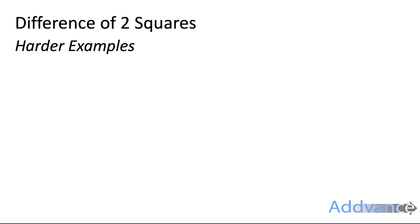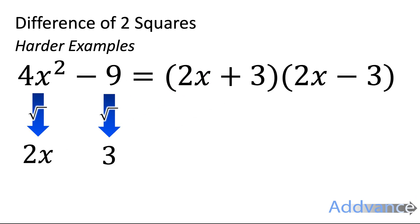Now more complicated examples we might have 4x squared minus 9. And what we do is we square root both terms. Square root of 4x squared is 2x. And square root of 9 is 3. Just look at the square root of 4x squared - that's 2x times 2x. And we can put it into brackets like this: (2x + 3)(2x - 3). Again you're just square rooting both terms and put it in this pattern. One with a plus, one with a minus in brackets.